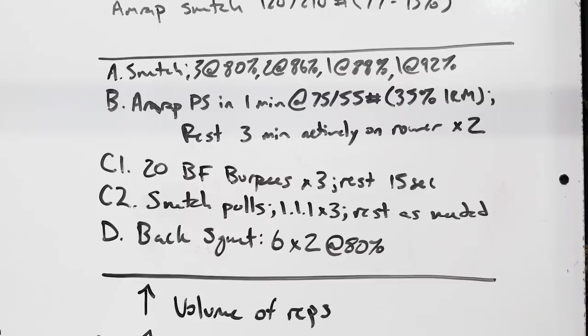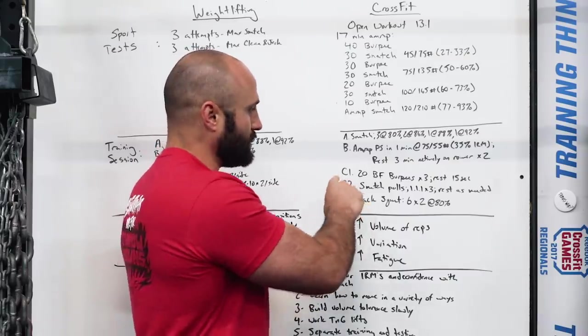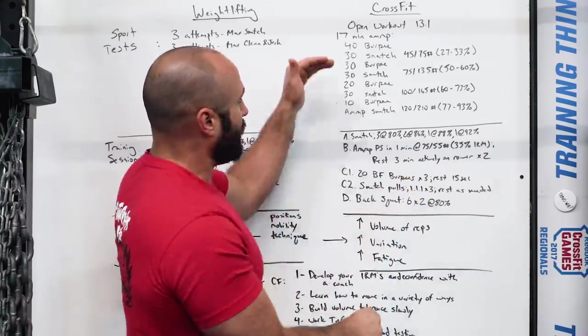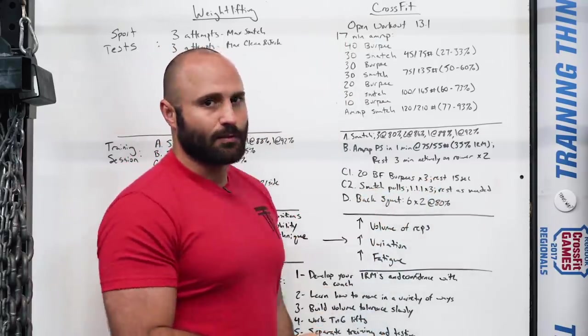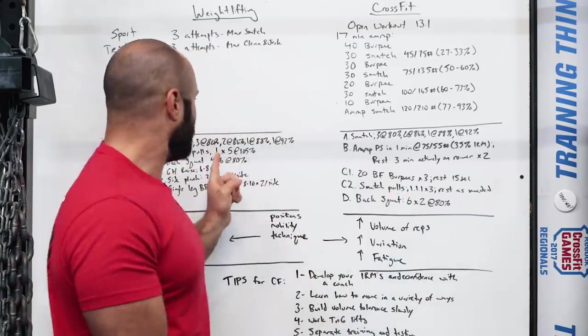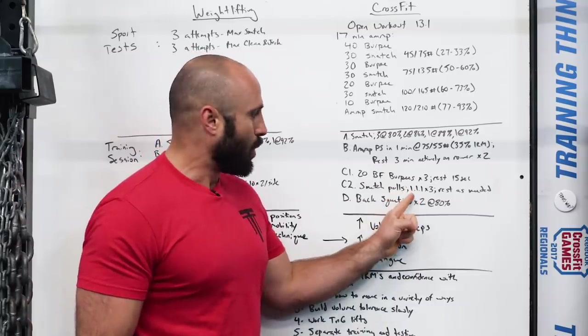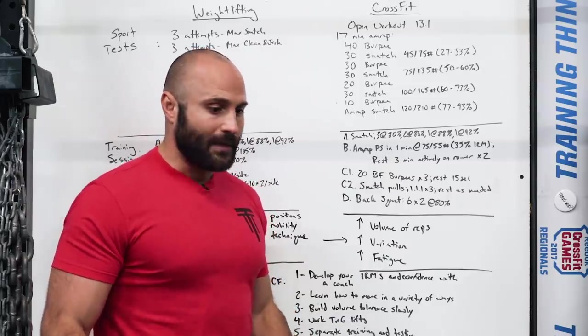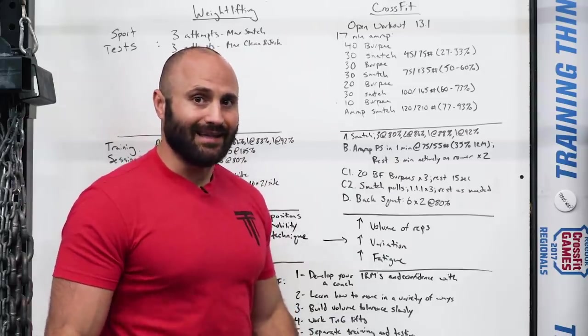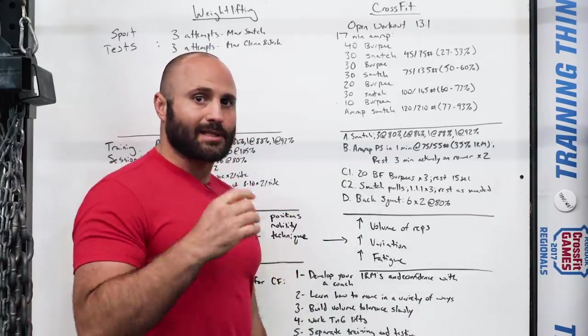I have two sets of that at the lighter load, then a C1-C2 series, which goes up in weight. It's 20 bar facing burpees. The C1-C2 means it's a circuit format. So I do 20 bar facing burpees, which simulates my movement from the test, rest 15 seconds, and then I do snatch pulls. The difference here with the snatch pulls, we'll still use that 105%. The difference is that we're going to do three in a row. So that's what this 1.1.1 means, is that we're actually going to lift, drop it, go back down, reset, lift, drop it.